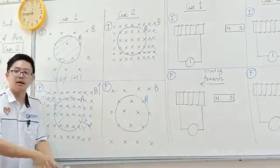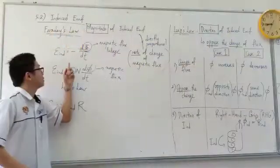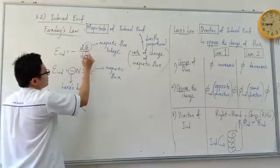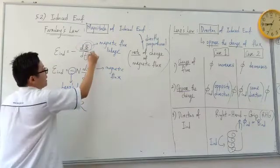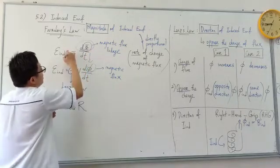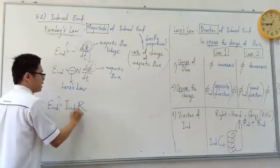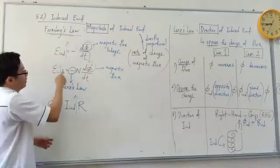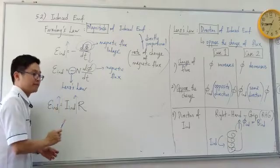The condition to produce EMF is there must be a change of magnetic flux. And if this change happens in a very short time, even a small change of magnetic flux in a very short time means a lot of EMF is produced. When a lot of EMF is produced, there will be a lot of current produced. This EMF formula can also be simplified to E = I × R.